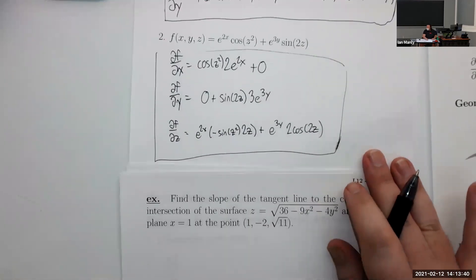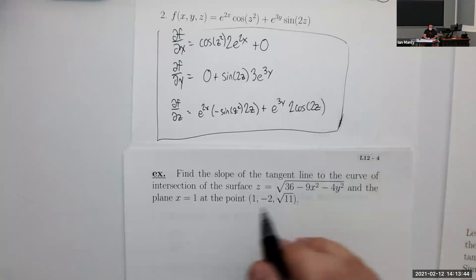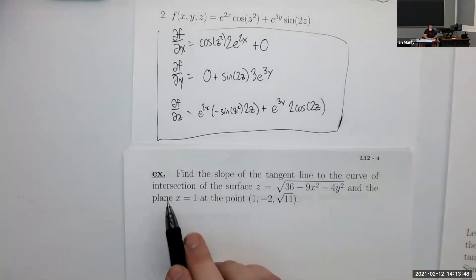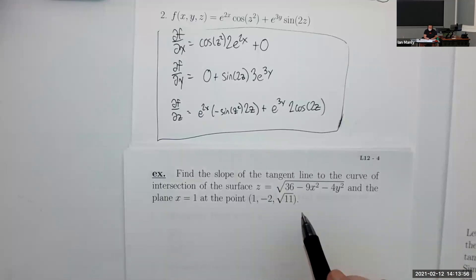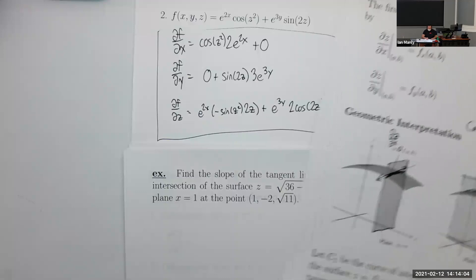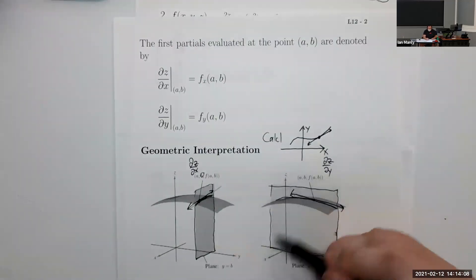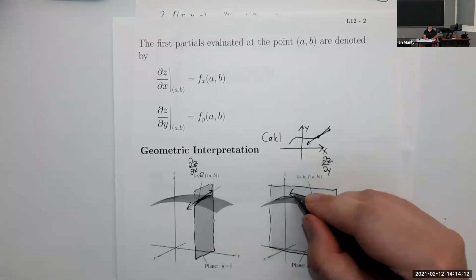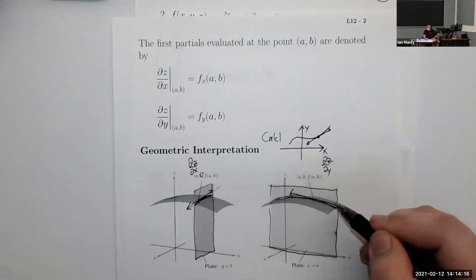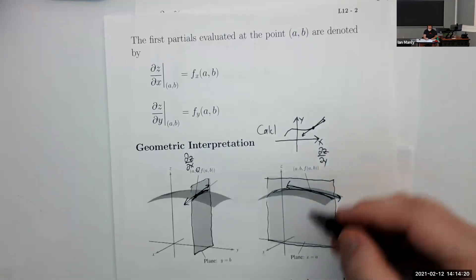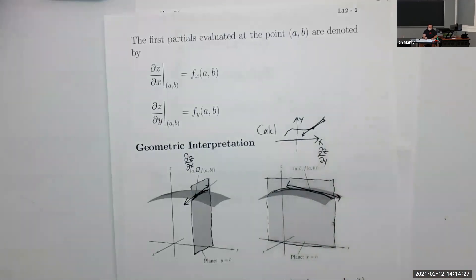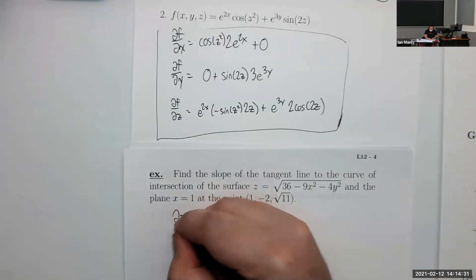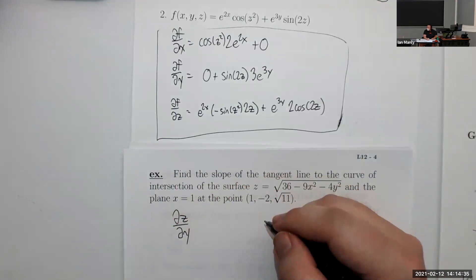Let's tackle something a bit less direct: find the slope of the tangent line to the curve of intersection of the surface z = √(36−9x²−4y²) and the plane x = 1 at a given point. We were already thinking about this earlier — we have a plane, a surface, and a curve of intersection. We want the slope of the tangent line to that curve, so we use a partial derivative. Since x is fixed by the plane, we use the y-derivative.